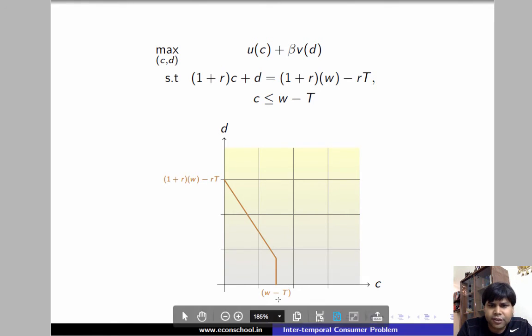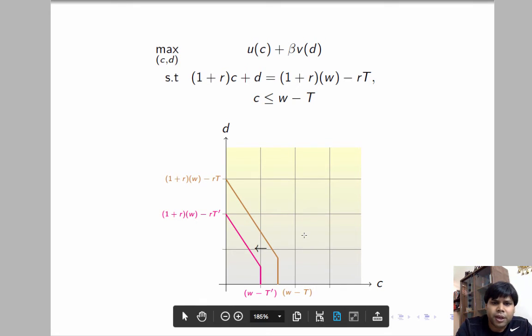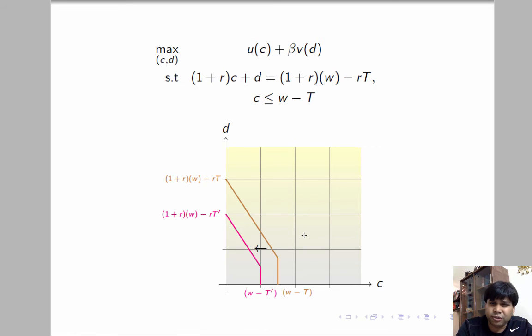Note that this is the horizontal intercept of the budget constraint. This is the vertical intercept of the budget constraint. And both these intercepts are decreasing in T. If you are going to increase T this is going to go down. And if you are going to increase T this is going to go down. So let's try and increase T from T to T prime and we are going to get that our budget set is going to look like this.